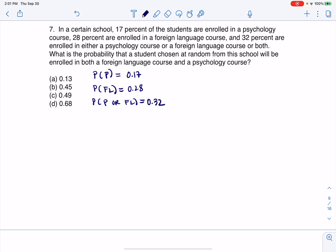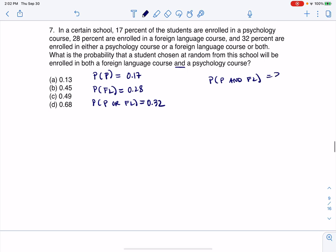So that's the information I was given. Let's see what they're asking for. What is the probability that a student chosen at random from this school will be enrolled in both a foreign language course and a psychology course? They're asking us to find the 'and' - the probability of P and FL, psychology and foreign language.